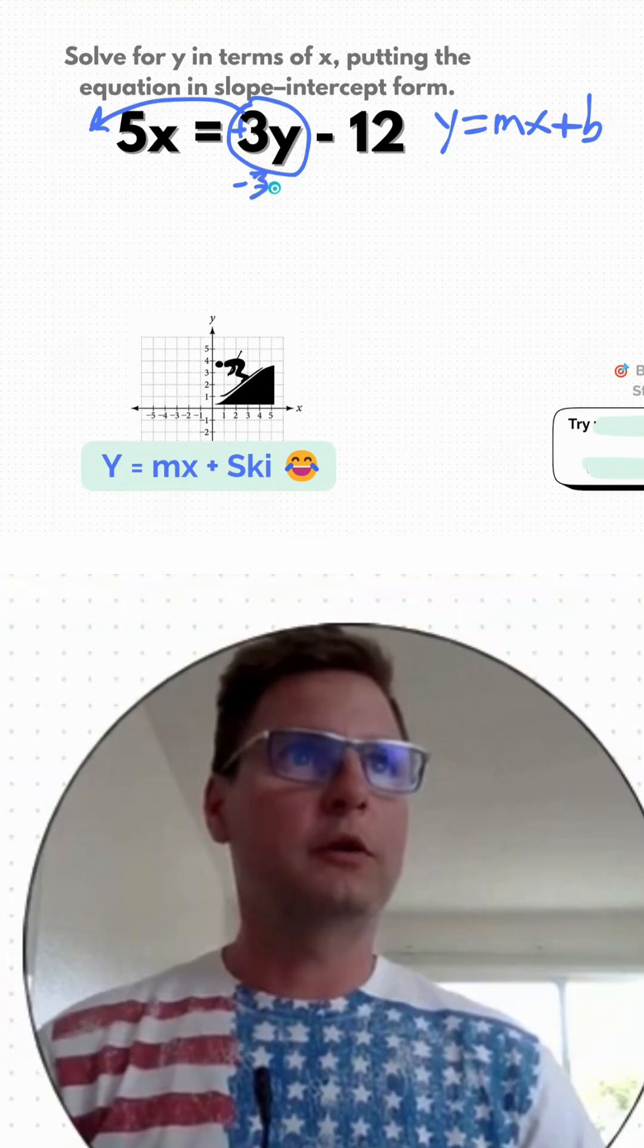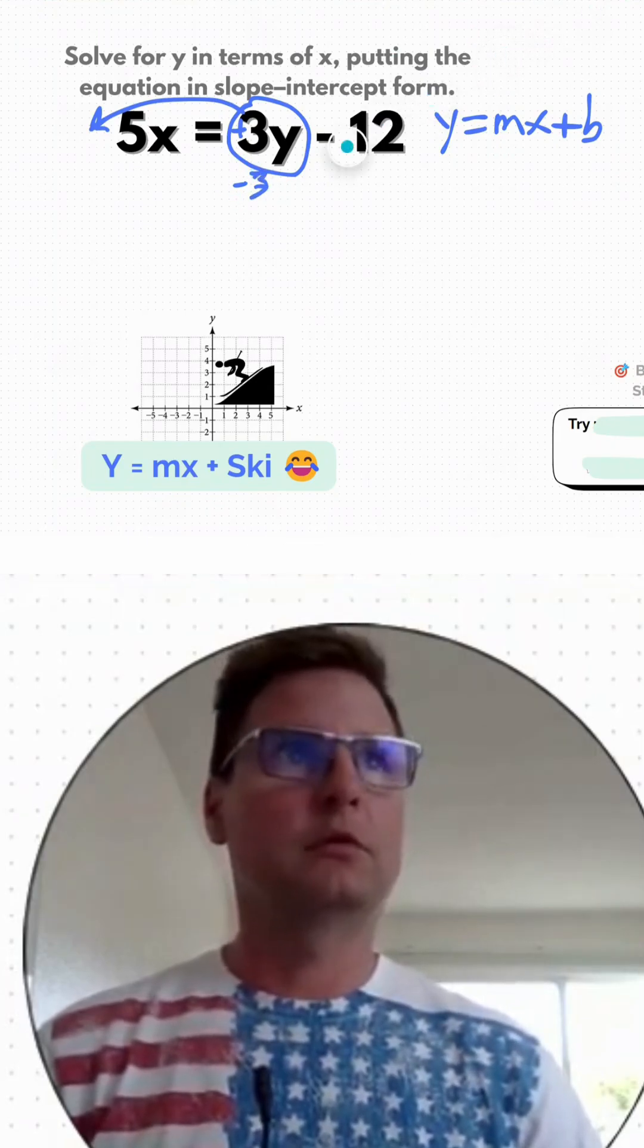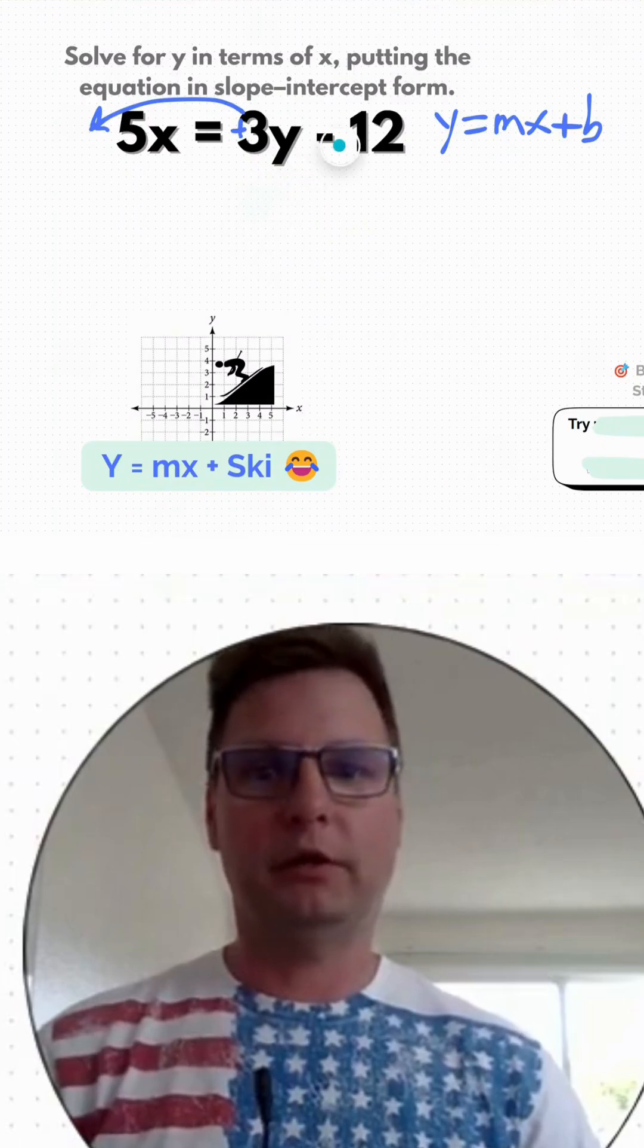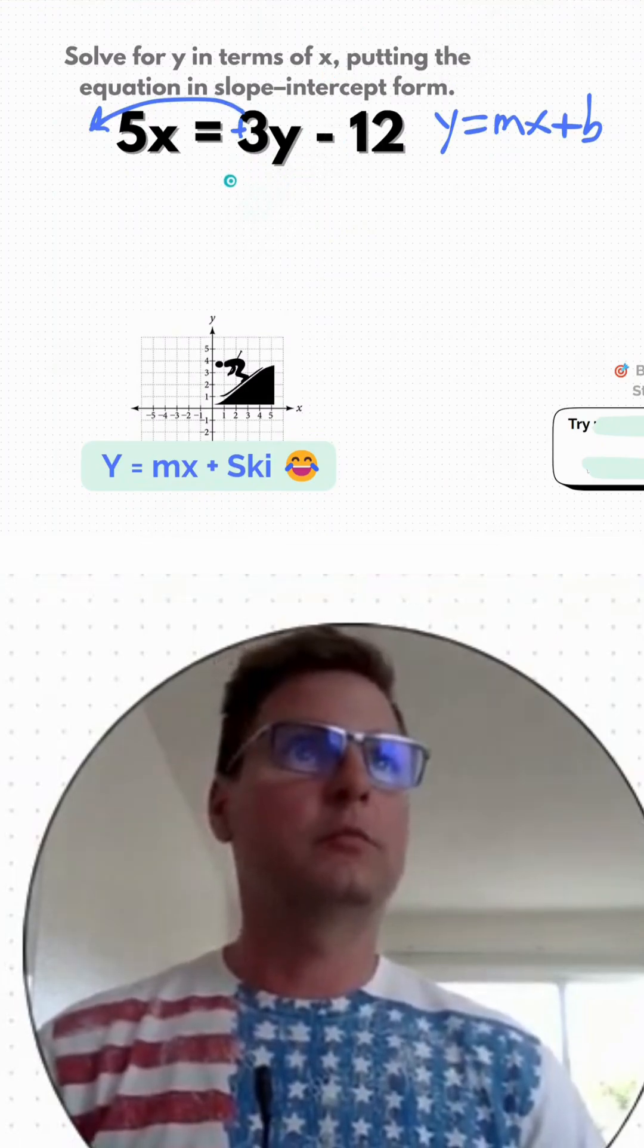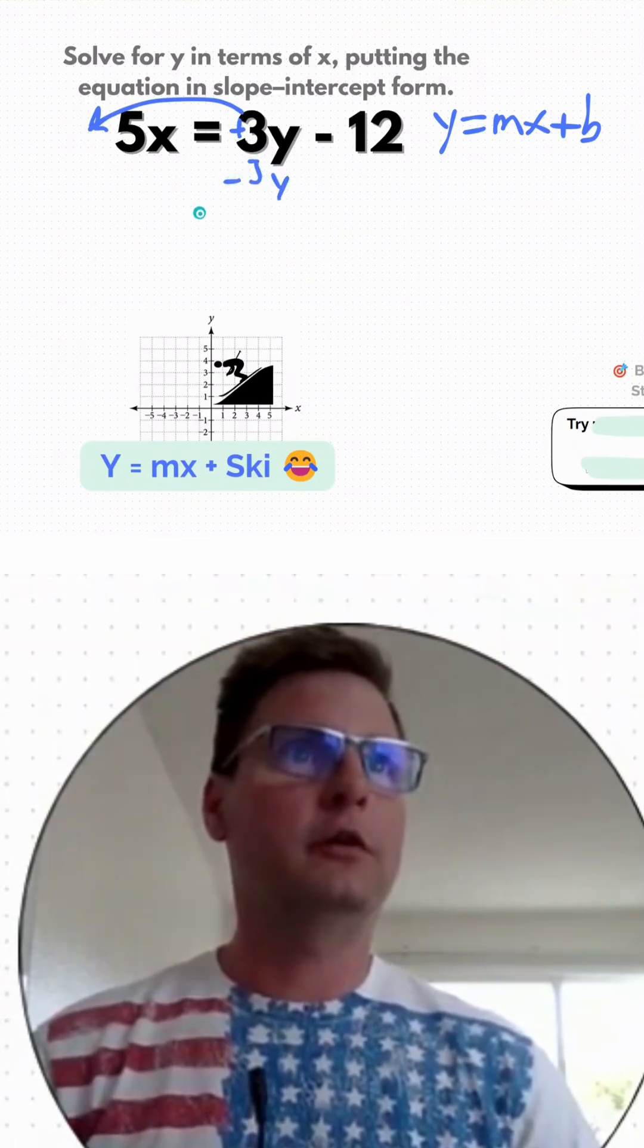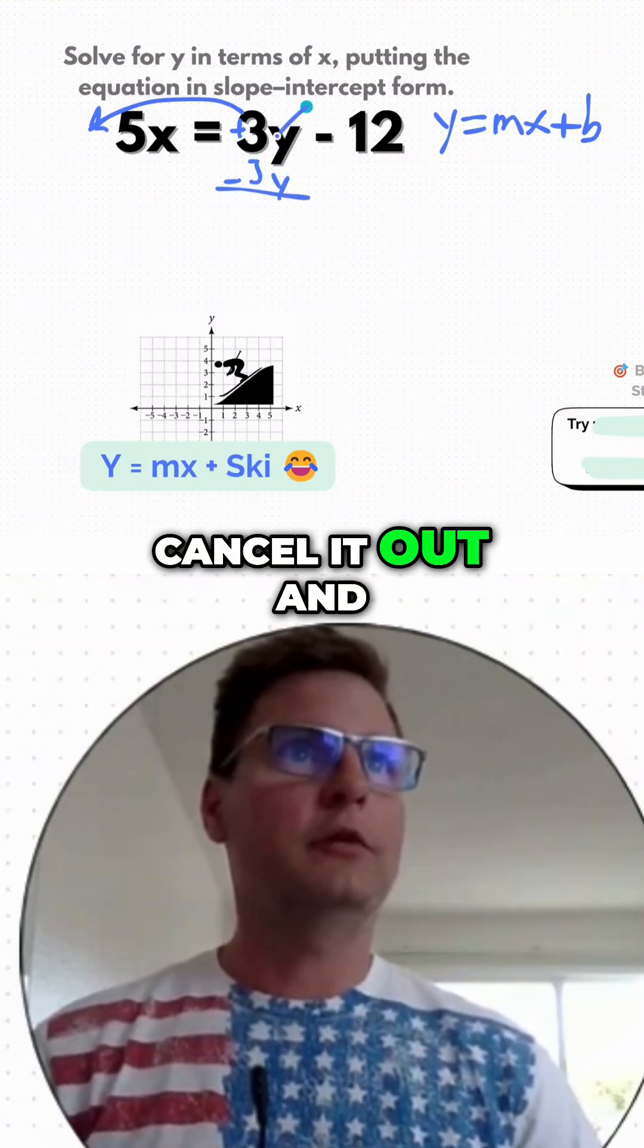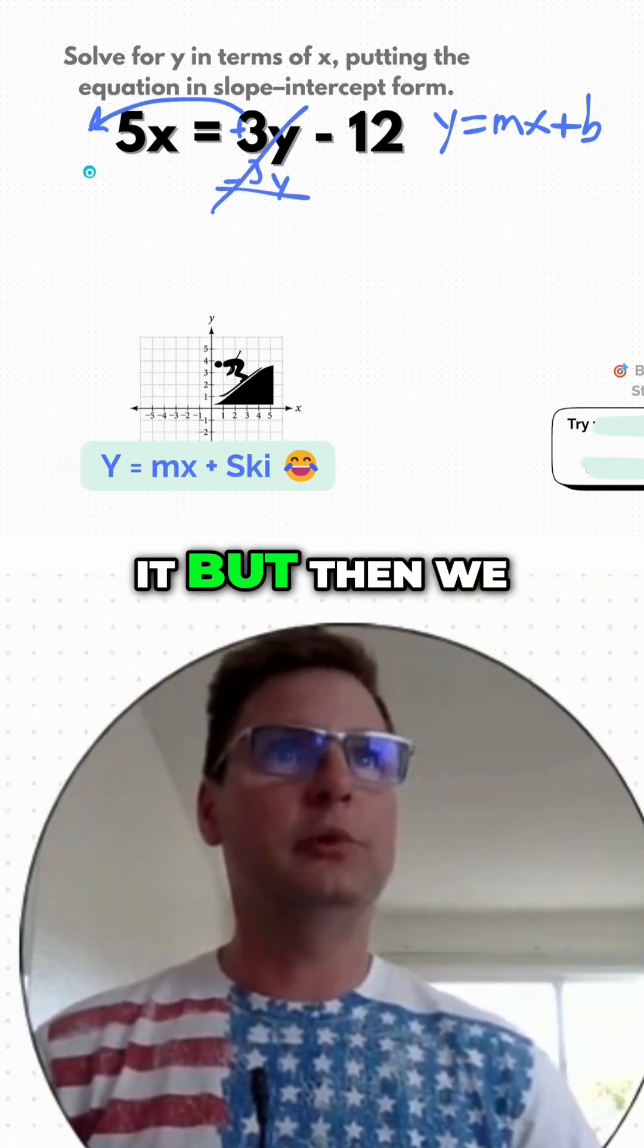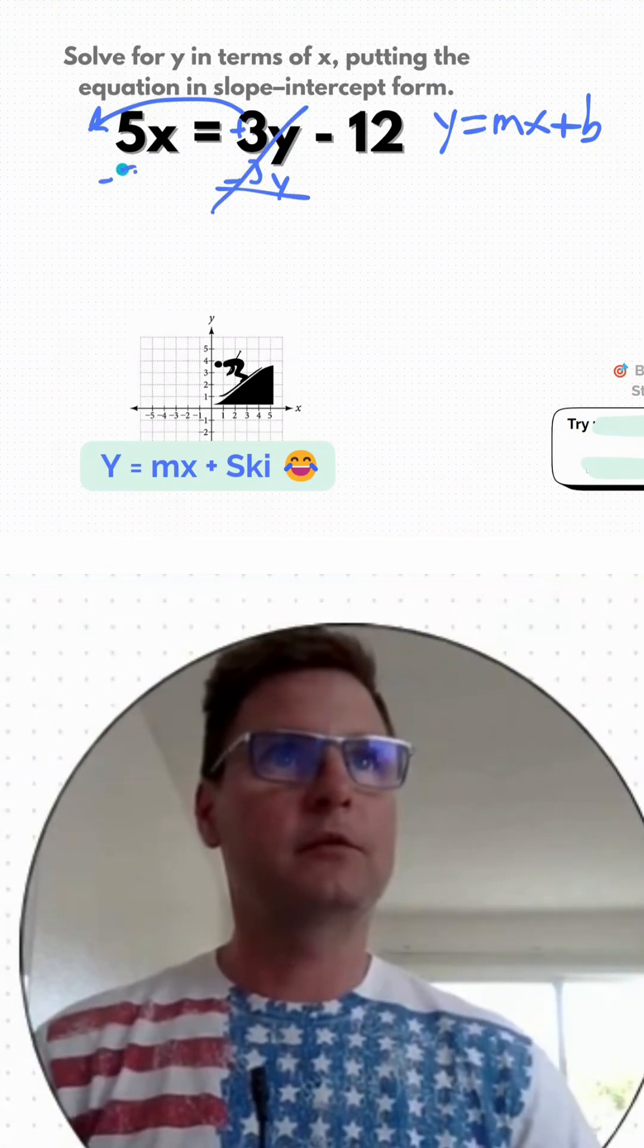Subtract 3y from this side. Cancel it out and remove it. But then we have to do the same to both sides of the equation, right, to keep it balanced. Subtract 3y.